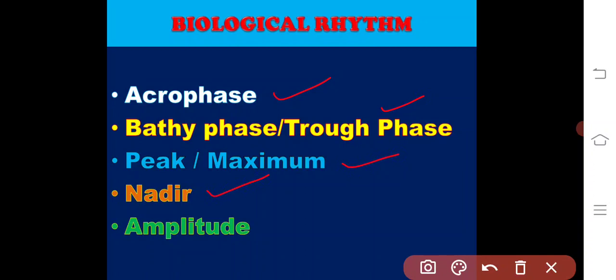How high or low the process gets is measured by the amplitude of that rhythm.